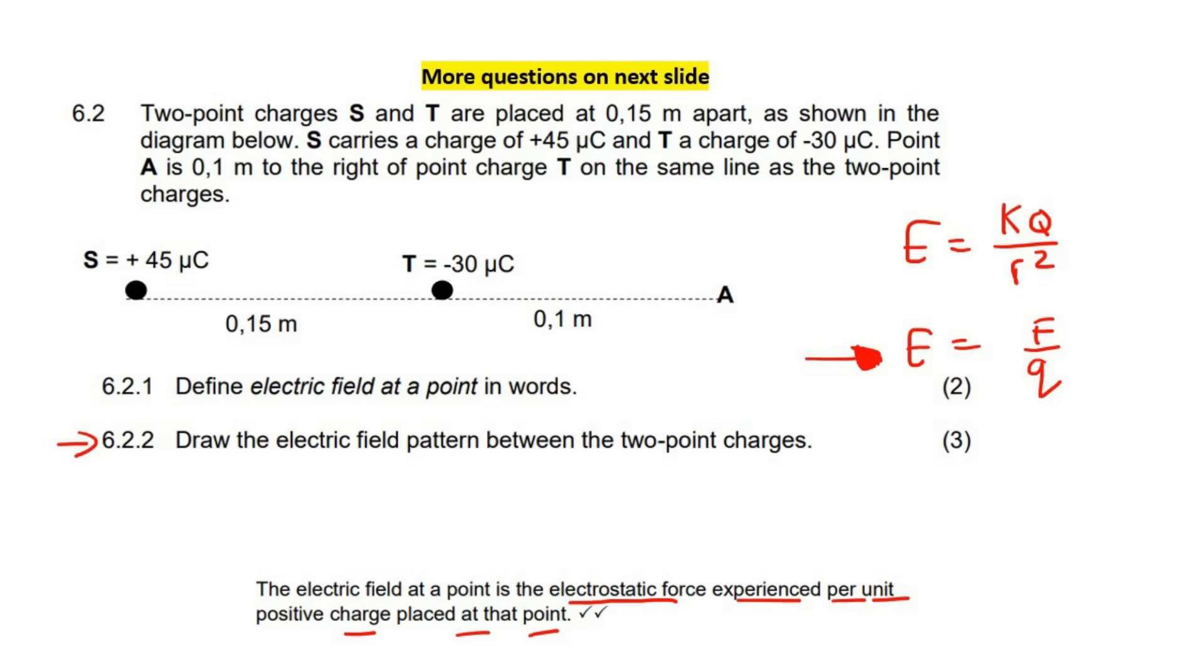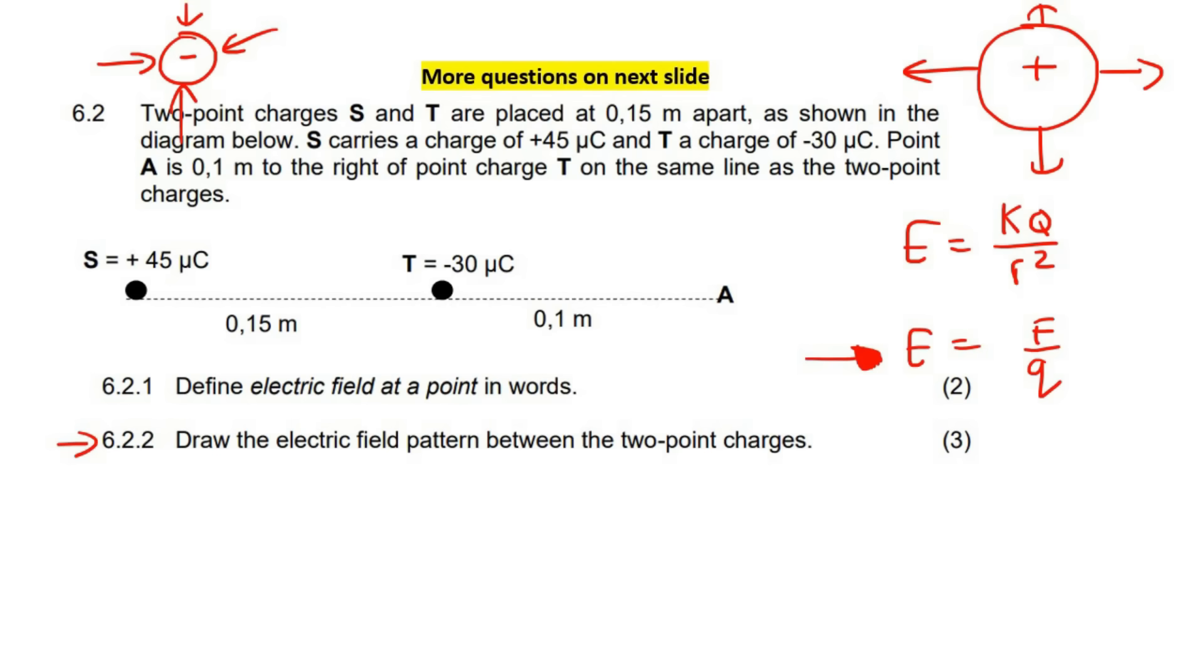This question says draw the electric field pattern between the two point charges. So what you need to remember is that when it's positive, the lines go away. When it is negative, the lines go towards. So if you have a positive and a negative next to each other, then you're just going to make it go from the positive to the negative and then show the arrow going towards the negative.